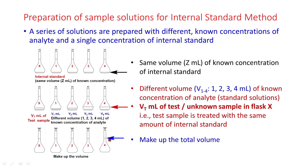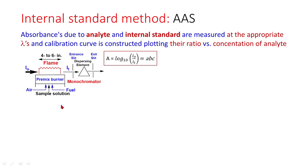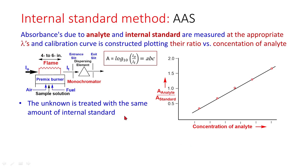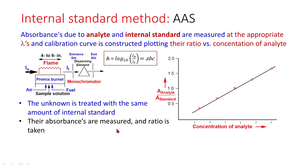Make up the total volume. Absorbances due to analyte and internal standard are measured at the appropriate wavelengths, and a calibration curve is constructed plotting their ratio versus concentration of analyte. Absorbance of analyte to the absorbance of standard is plotted versus concentration of analyte. The unknown is treated with the same amount of internal standard. Their absorbances — that is, of analyte and standard — are measured and the ratio is taken.